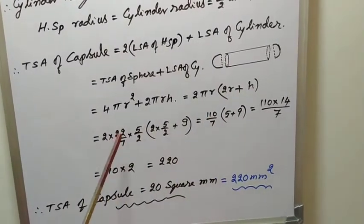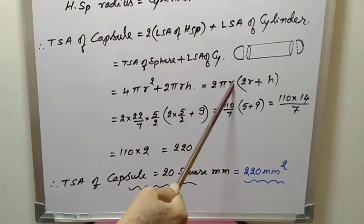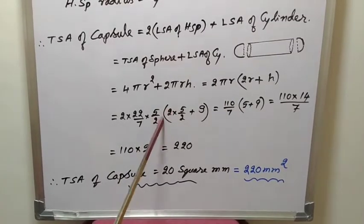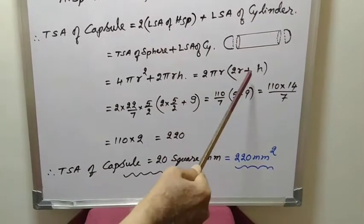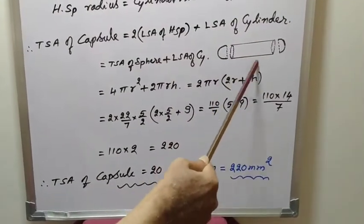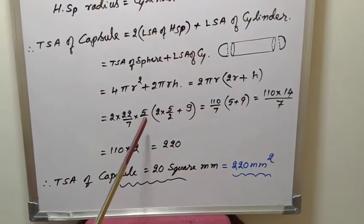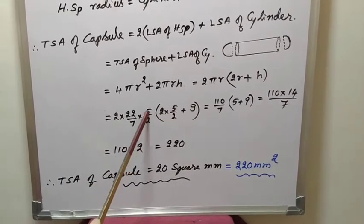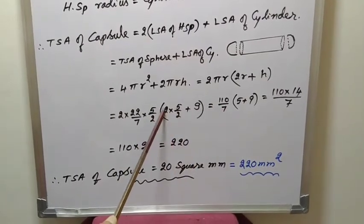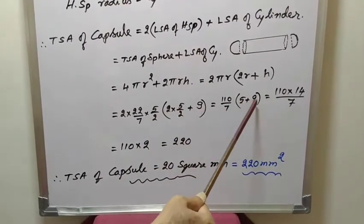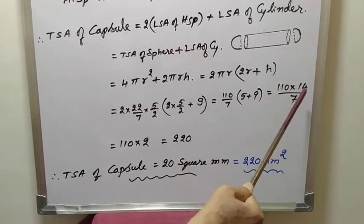Now, substitute the values. 2 into pi means 22 over 7 into R means 5 by 2 into 2R, 2 into 5 by 2 plus H. Now, this height of cylinder, this part, that is 9 millimeters. 2, 2 cancels, 5 into 22, 110 divided by 7. 2, 2 cancels, 5 plus 9. So, 110 divided by 7 into 5 plus 9 means 14.